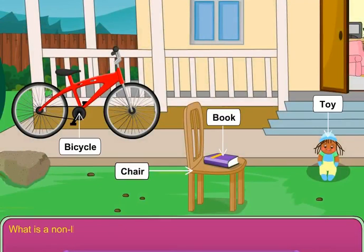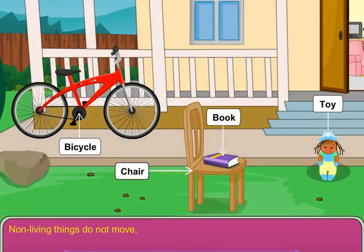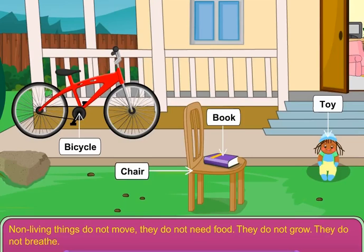What is a non-living thing? Non-living things do not move. They do not need food. They do not grow. They do not breathe. They do not feel. And they do not reproduce.